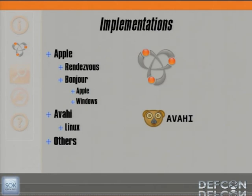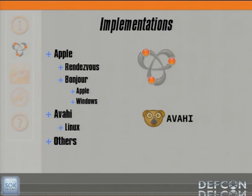Looking at some implementations of multicast DNS: it was all started by Apple — the RFC authors are from Apple — but it was picked up by Avahi, and you find this service available in a great number of Linux distributions. More surprising is that there are a tremendous number of implementations on network appliances. I believe even TiVo is running this. So TiVo, network attached storage, cameras, multimedia devices, printers — everything seems to be loaded with this now.